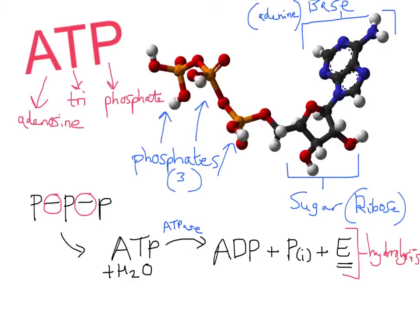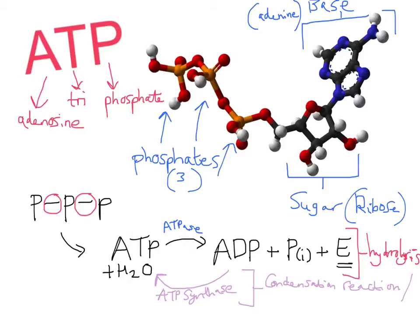This is a hydrolysis reaction: we break ATP down using ATPase and water to give ADP, inorganic phosphate, and energy — because the bonds between the phosphates are unstable. The reverse can also happen: ADP and inorganic phosphate can create ATP using the enzyme ATP synthase. That reverse reaction is called a condensation reaction, or more specifically, because we've added a phosphate to a molecule, it's called phosphorylation.